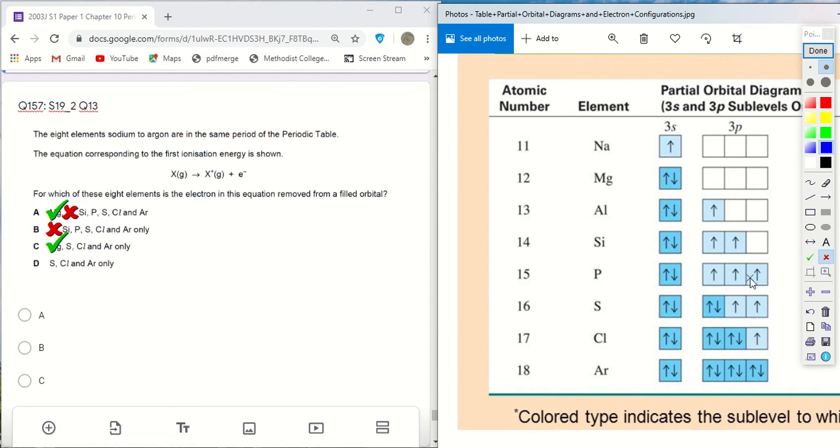Phosphorus, all 3p orbitals are not filled. Only one single electron in each orbital. So if you remove from any of these, they are not considered filled also.